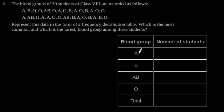The number of students having blood group A is 9, and the number of students having blood group B is 6.